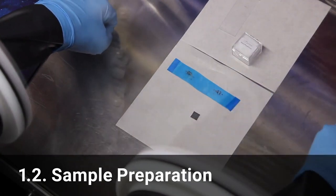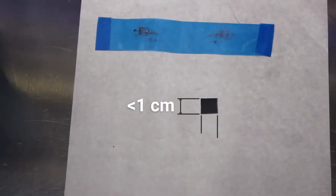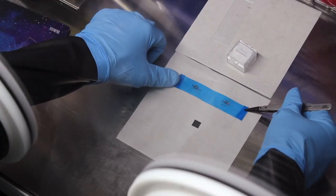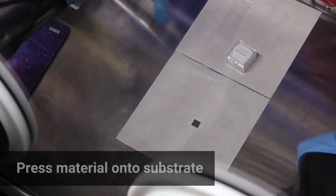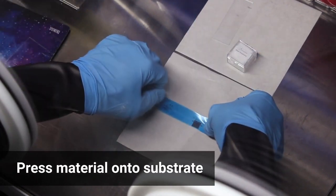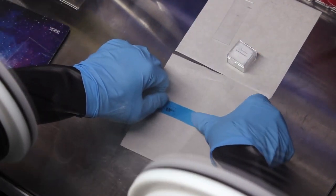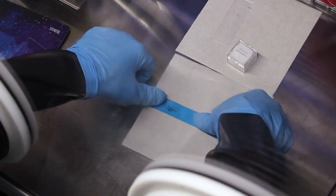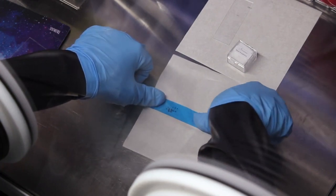Start with a substrate cut into square chips less than 1 cm on a side. Using the prepared tape, firmly press the deposited material onto the substrate. Apply firm pressure with your thumb or gently press with tweezers so the material contacts the chip as much as possible.